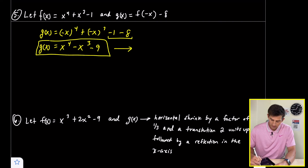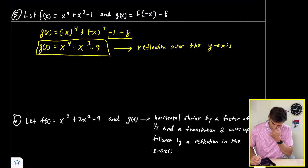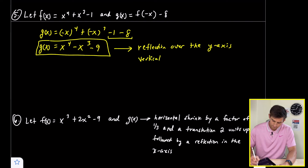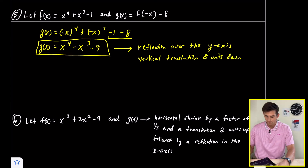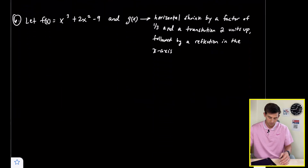What happened here? We had a reflection over the y-axis — because we made x become negative x — and then we had a vertical translation eight units down. That gives us two transformations for number five.